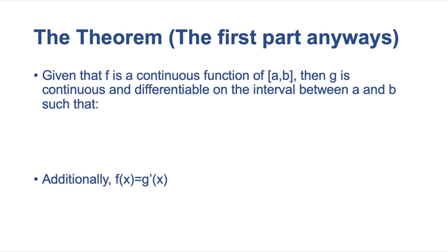Right, so now let's talk about the theorem. So given that f is a continuous function on the interval a and b, then g is continuous and differentiable on that interval between a and b, such that g(x) is defined as the integral between a and x of f(t) dt.